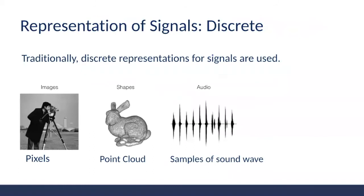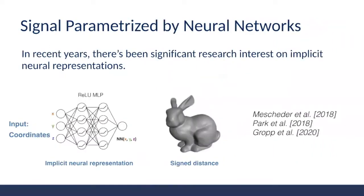The way we represent signals has a significant impact on how we solve problems. Traditionally, discrete representations for signals are used. In recent years, however, there's been significant research interest in implicit neural representations, which learns a neural network that parametrizes phi to map x to some quantity of interest. So here x is the input — for instance, we can map the 3D coordinates in 3D space to a shape defined by the signed distance of points.